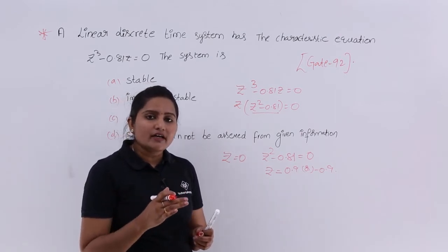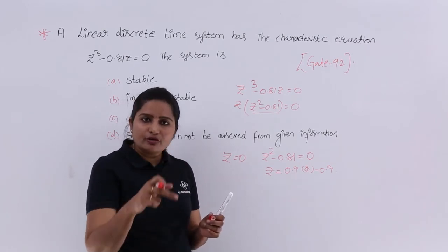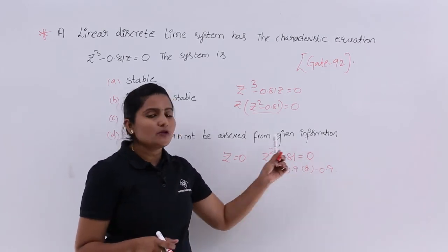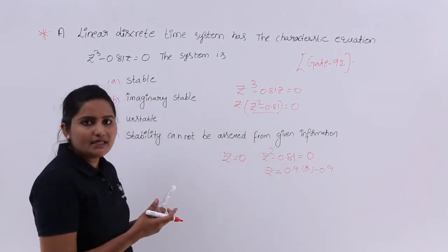When you are asked to find out the stability through ROC, your ROC needs to touch the unit circle. Here all the poles are inside the unit circle, so the system may be stable.